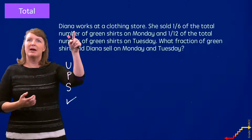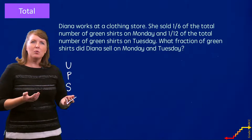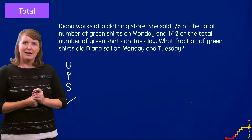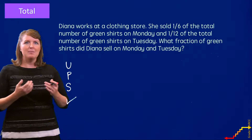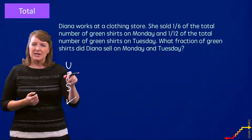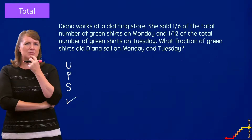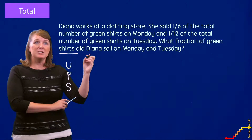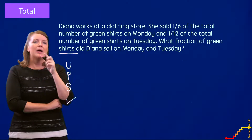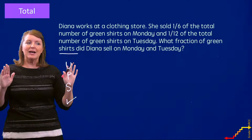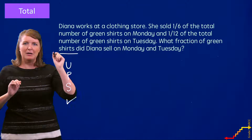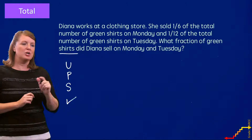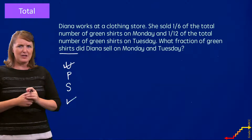So I have to understand the problem by reading it: 'Diana works at a clothing store. She sold one sixth of the total number of green shirts on Monday and one twelfth of the total number of green shirts on Tuesday. What fraction of green shirts did Diana sell on Monday and Tuesday?' Another part of understanding is focusing on what this problem is about — this problem is about shirts. So I'm going to underline 'shirts.' Be very picky about what you underline — don't underline the whole problem, just one, two, maybe three words.